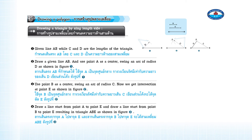Draw a line from point A to point E and draw a line from point B to point E, resulting in triangle ABE as shown in Figure 3.